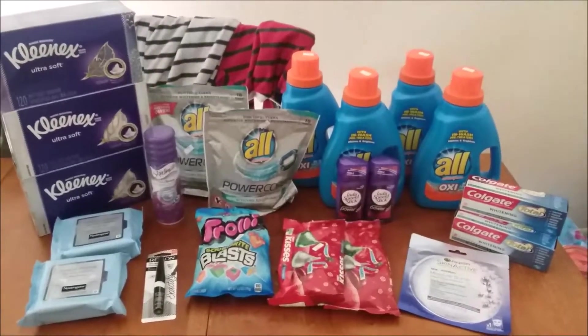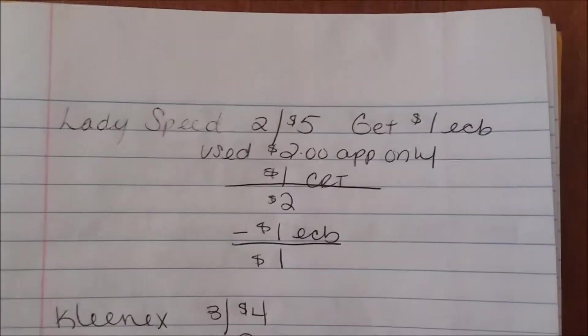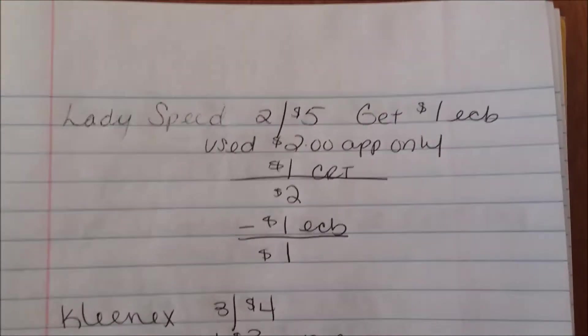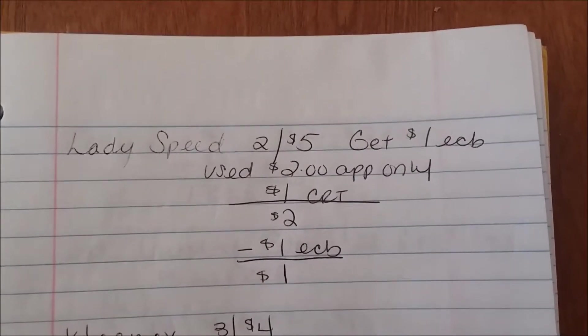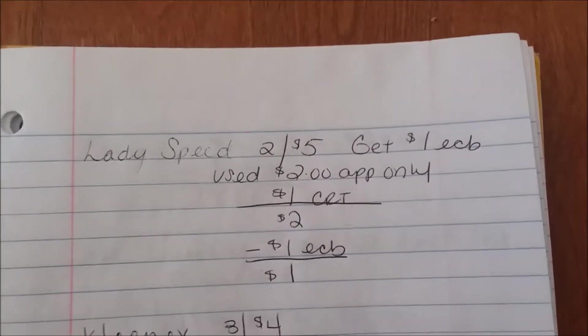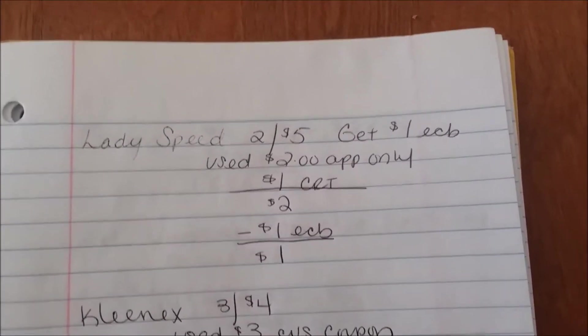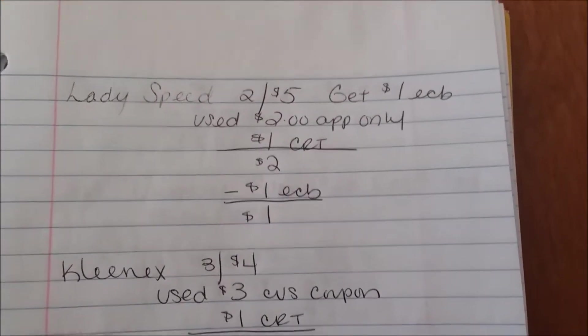With the Lady Speed Stick it's on sale for two for five. When you buy two you're gonna get a dollar ECB. I used a $2 app only coupon and I had a dollar off a deodorant CRT that brought it down to $2. After I got my dollar ECB back I only paid $1 for both of those right there.